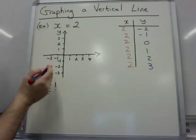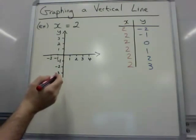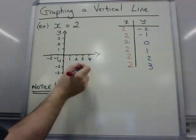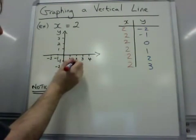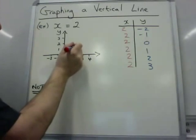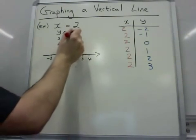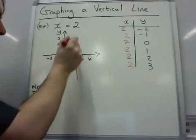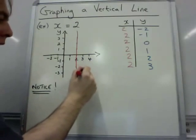Let's pop it on the graph. So 2 minus 2, 2 minus 1, 2 zero, 2 one, 2 two, 2 three. Again, you should be using a ruler, but because I'm a professional I can do it without a ruler. And I label the line.